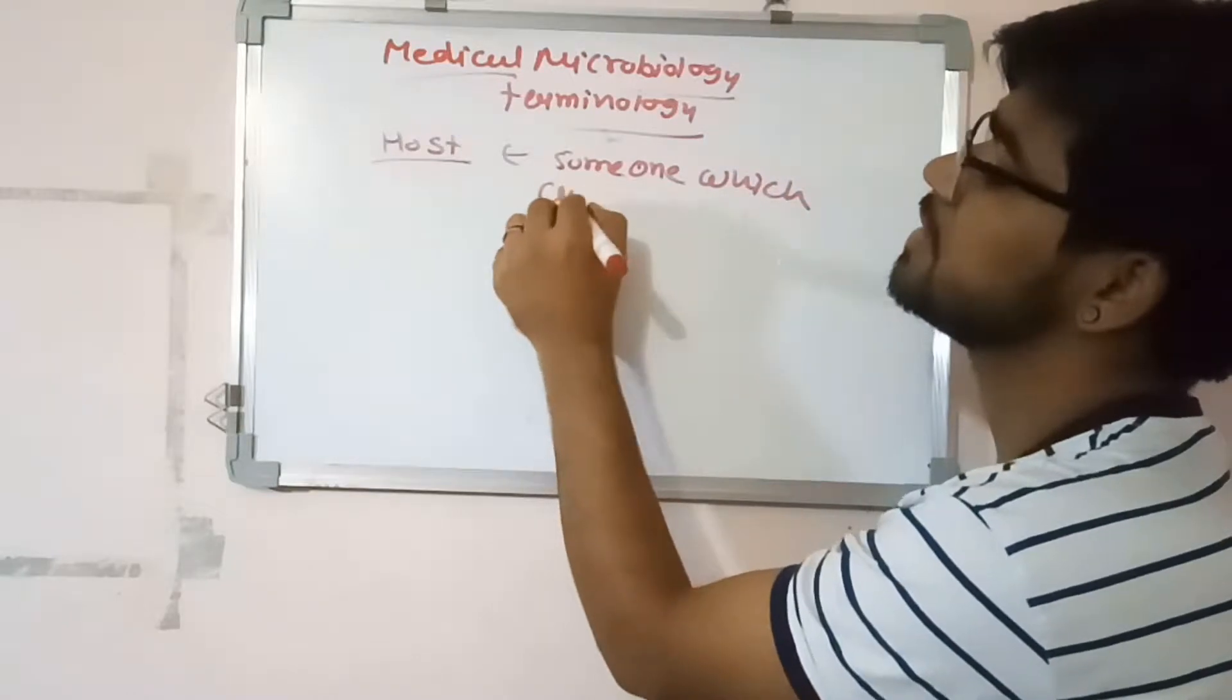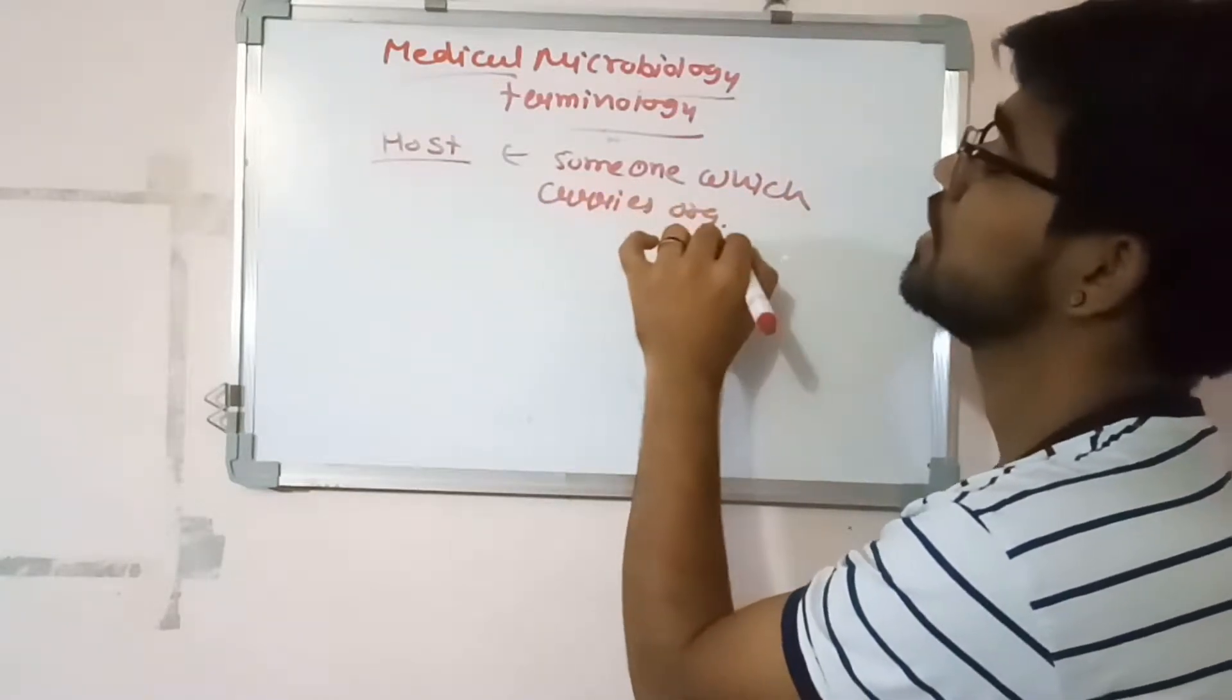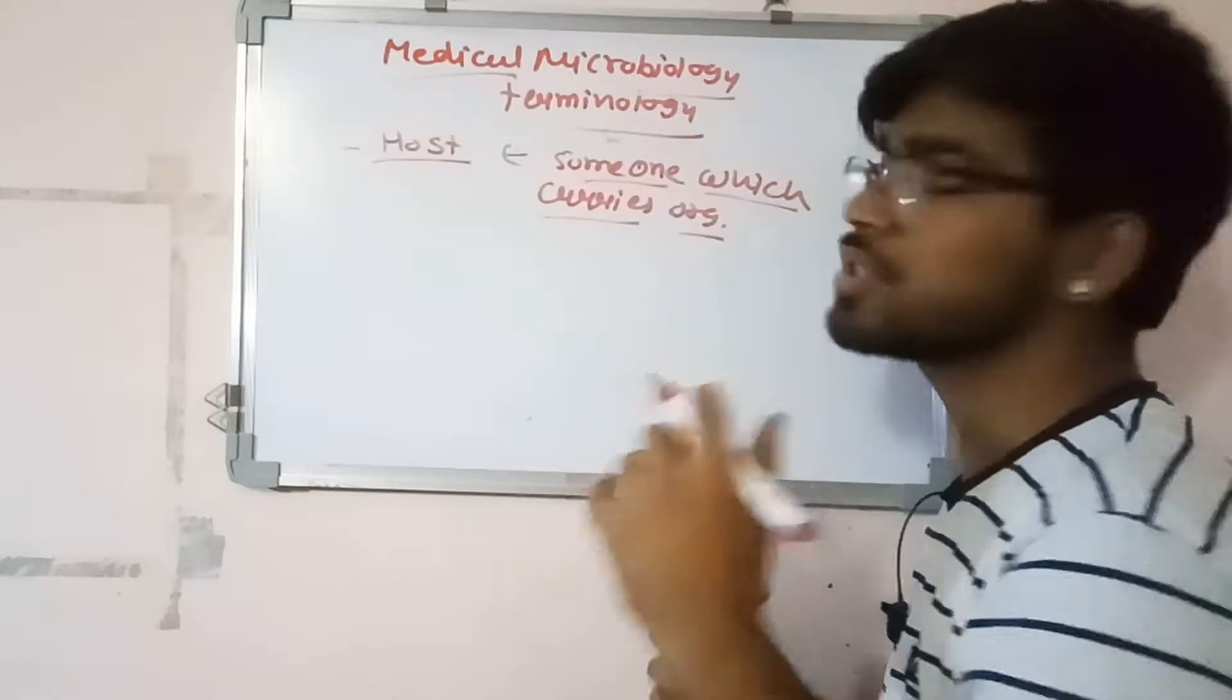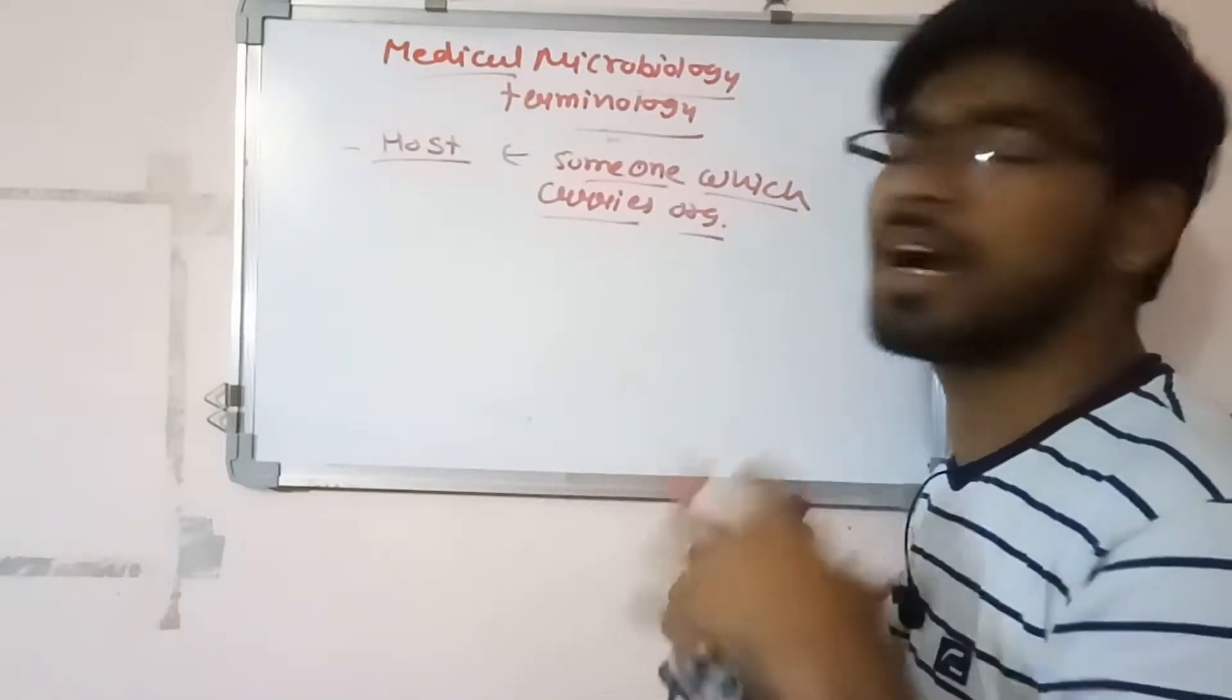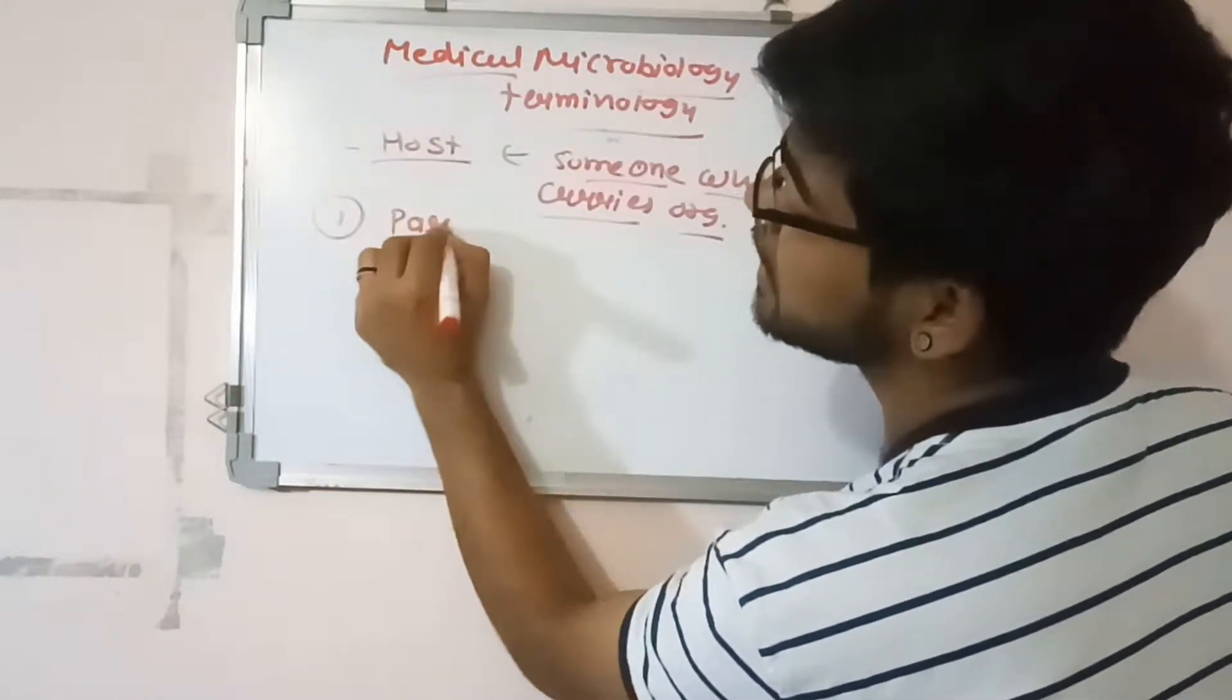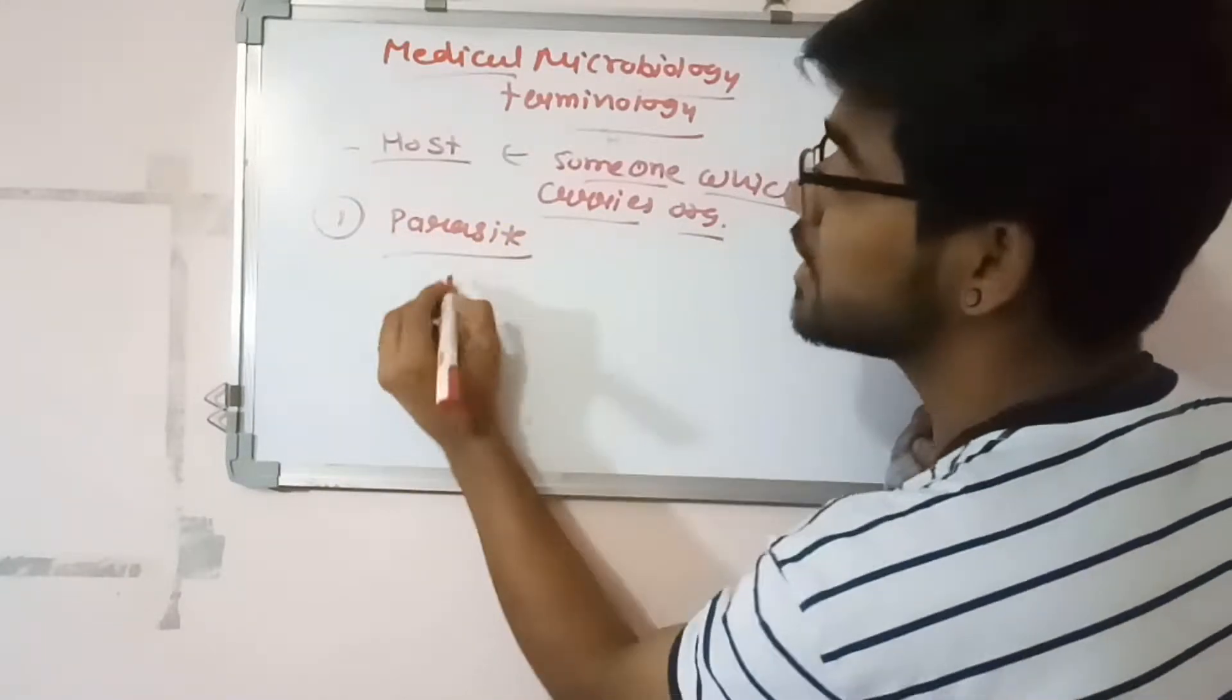Someone which carries organism is called host. Now let's start about the host and microorganism interaction - what types of interactions are found in host and microorganism. First is the parasite. What is parasite?